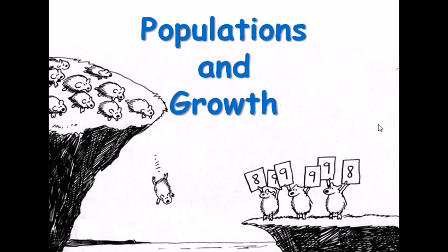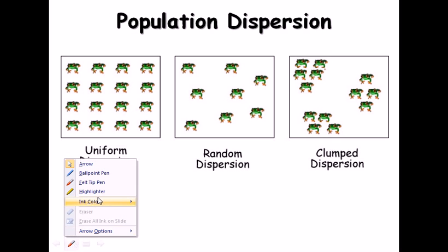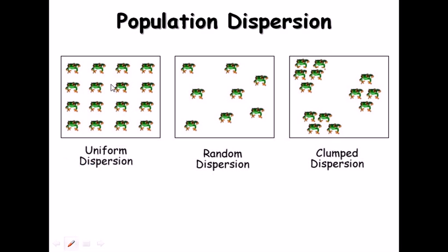A population is a mixture of different species. Population dispersion can be studied in three different ways. The first is called uniform dispersion. As we can see in this picture, the members of the population are distributed uniformly across the area — so it is called uniform dispersion.